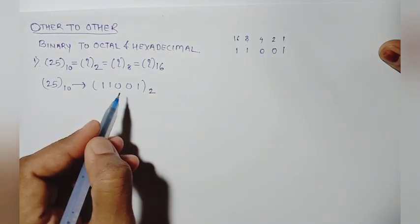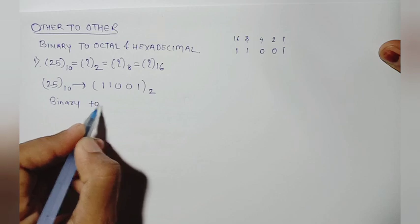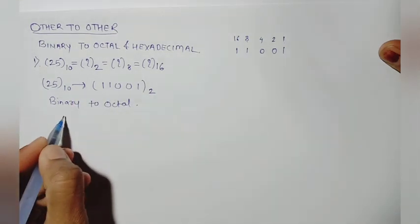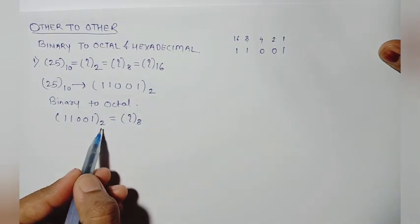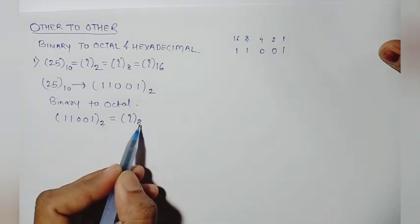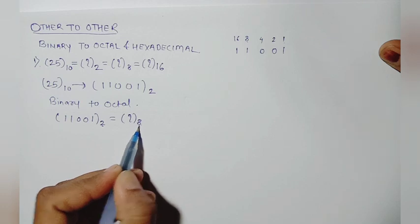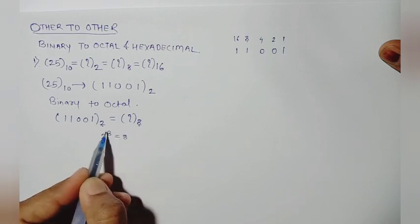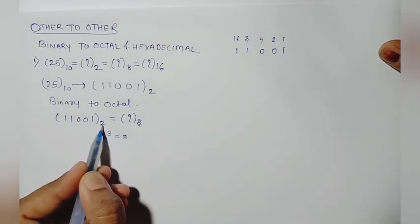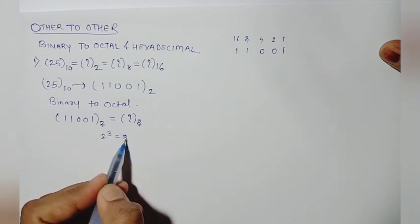If we have to convert this binary number to octal, we observe the bases: this is base 2 and this is base 8. Two to the power of three equals eight. That means we have to group three bits together to convert binary to octal.